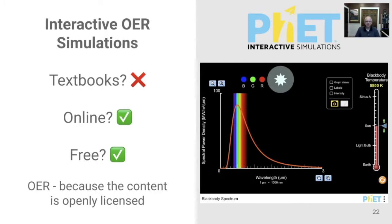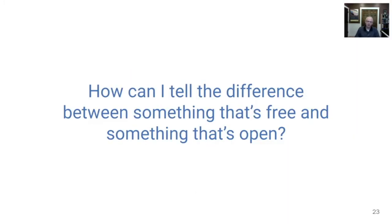As a final example, interactive OER simulations — are these textbooks? No. Are they online? Yes. Are they free? Yes. But we call them OER because the content is openly licensed. That's what makes the difference. It's not about being a textbook, it's not about being online, it's not about being free. As long as the content is openly licensed, it's proper to call the resource an open educational resource.